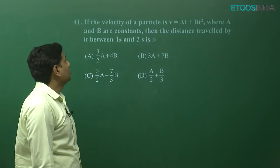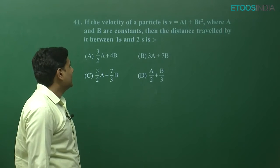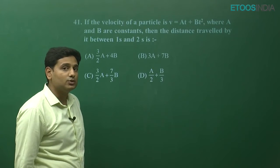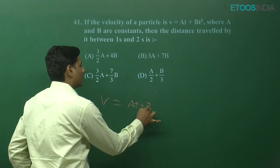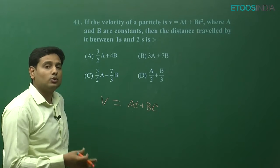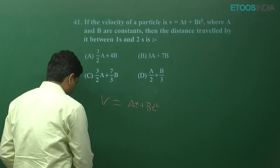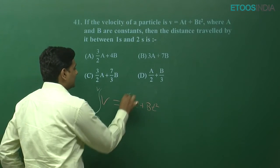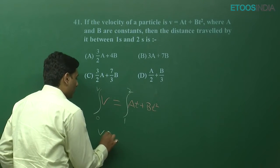Question number 41: If the velocity of a particle is v = at + bt², where a and b are constants, then the distance travelled between 1 second and 2 seconds. So a velocity equation is given. We know that if I integrate this equation with respect to time, I will get the displacement or distance. So integrating from t = 1 second to t = 2 seconds.